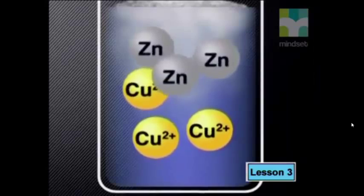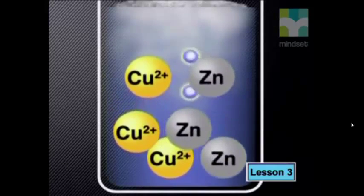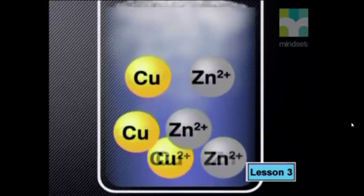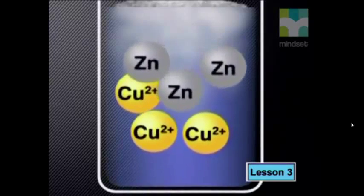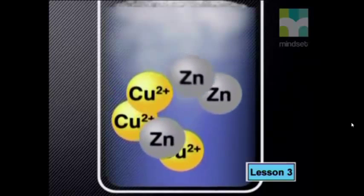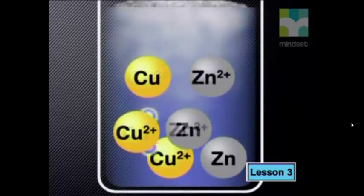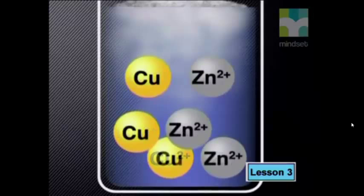The copper ions are the oxidizing agent. Here's the whole picture: copper ions gained negative electrons, reducing the positive charge and formed a copper atom — this is a reduction reaction. Zinc is the reducing agent for this reaction. The zinc atom lost its negative electrons, increasing its positive charge and formed zinc ions — this is an oxidation reaction. Copper 2+ is the oxidizing agent for this reaction.